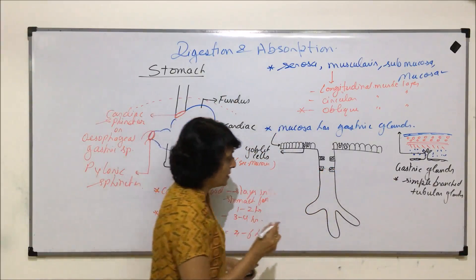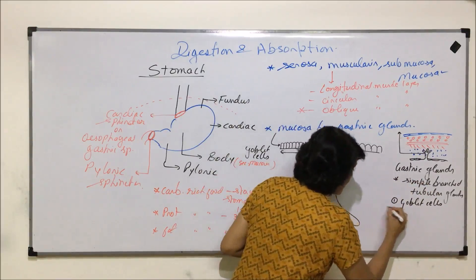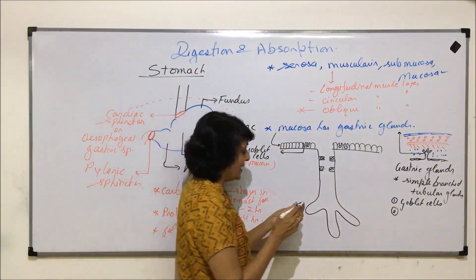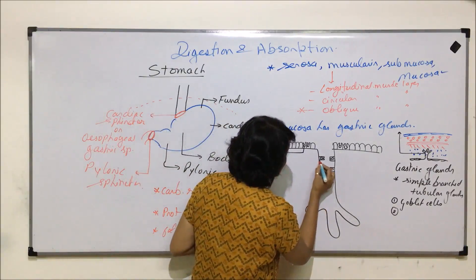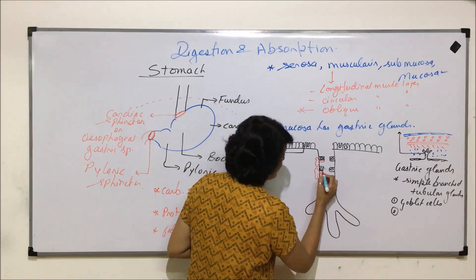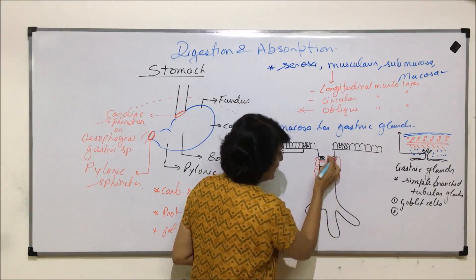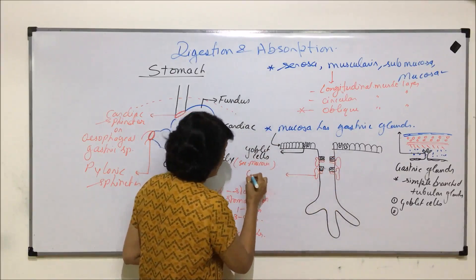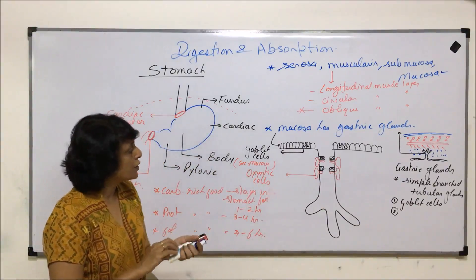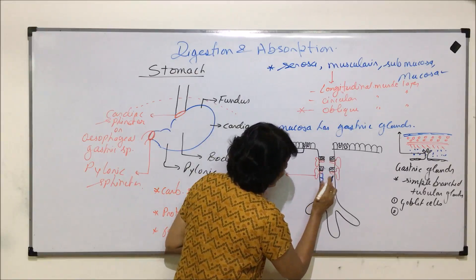So, listing the cells: the first type is goblet cells. The second type of cells, found mainly in the neck region, are large cells. These are called oxyntic cells (also written as oxenic cells). After these, there are many more columnar cells.